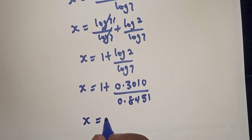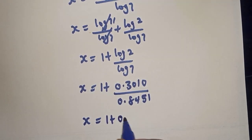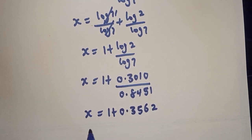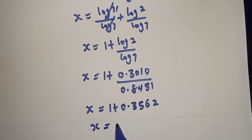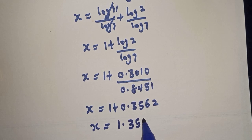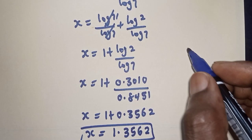s is equal to 1 plus, if you divide 0.3010 by 0.8451, we have 0.3562. Then s is equal to 1 plus 0.3562, which is 1.3562. This is the final answer.